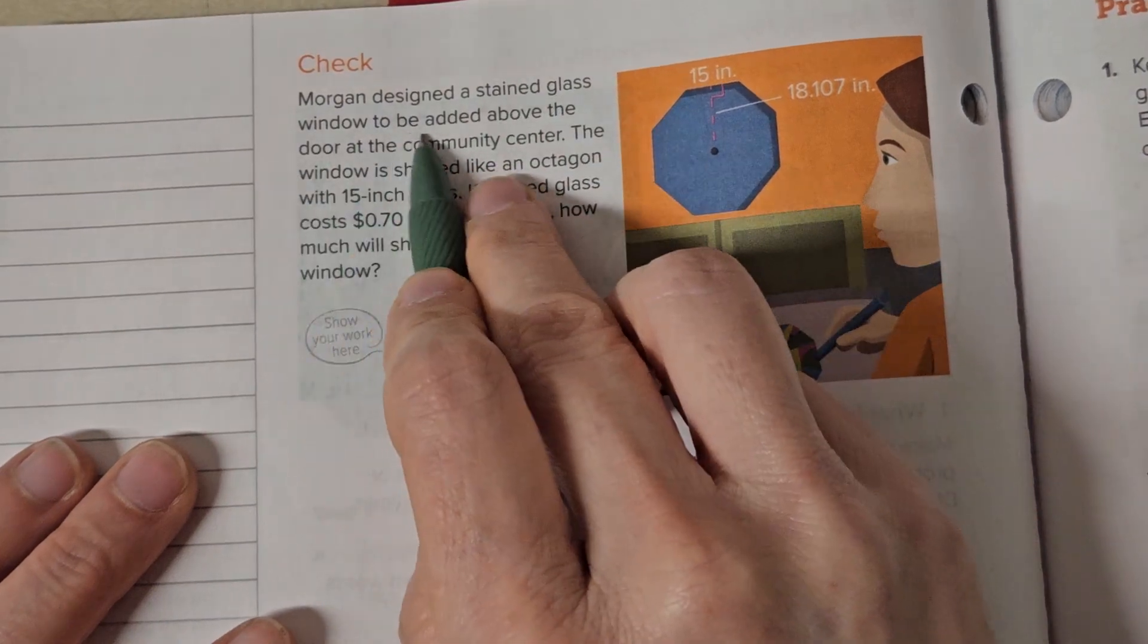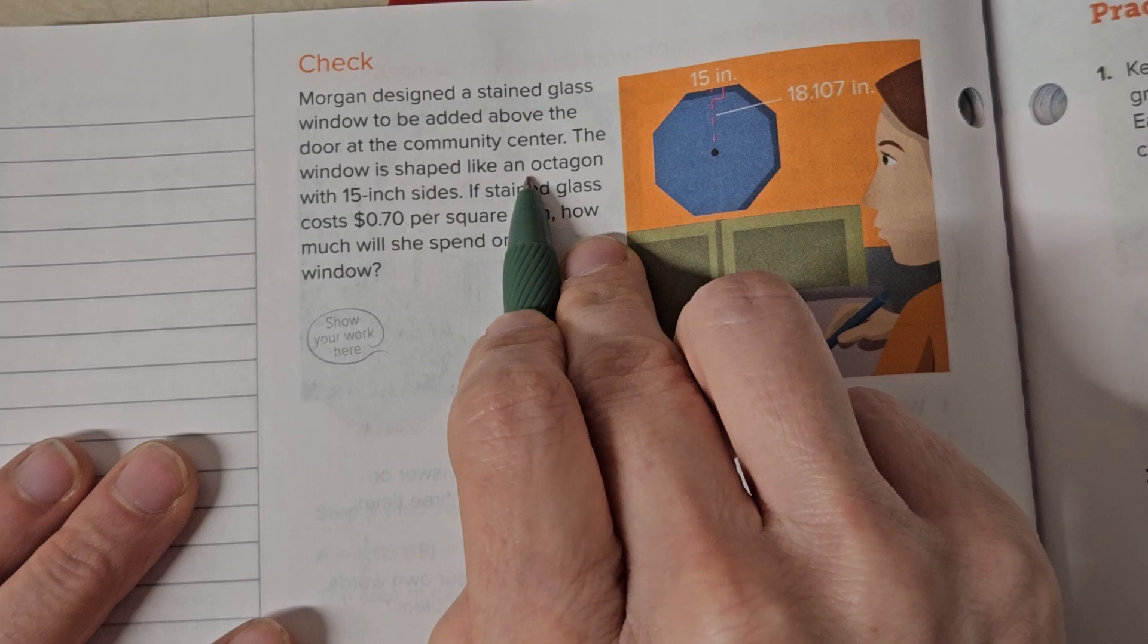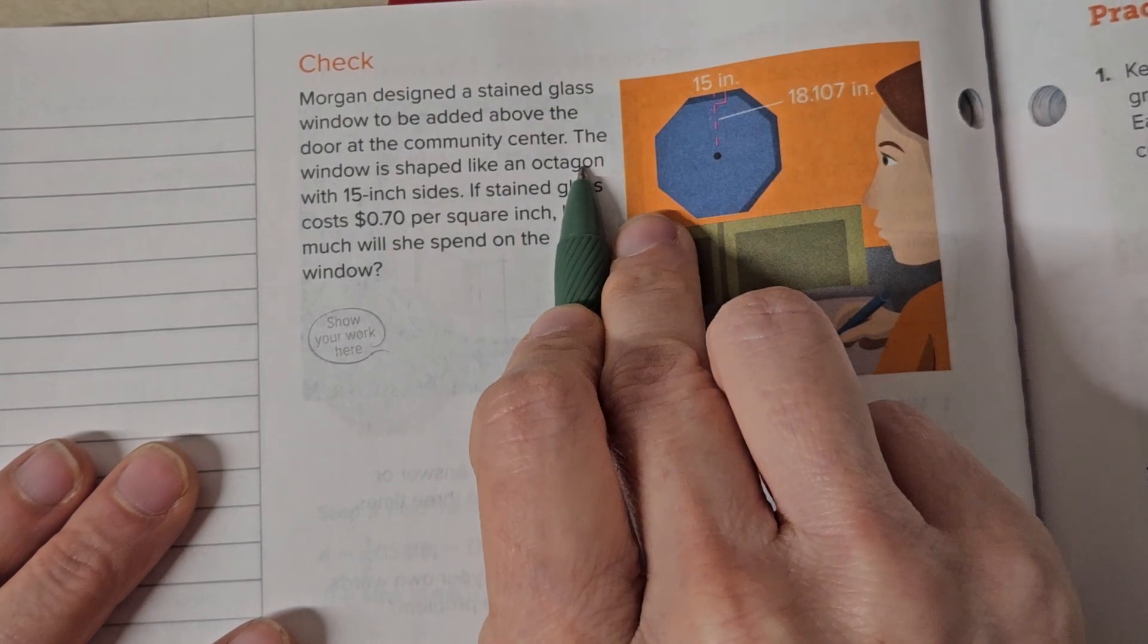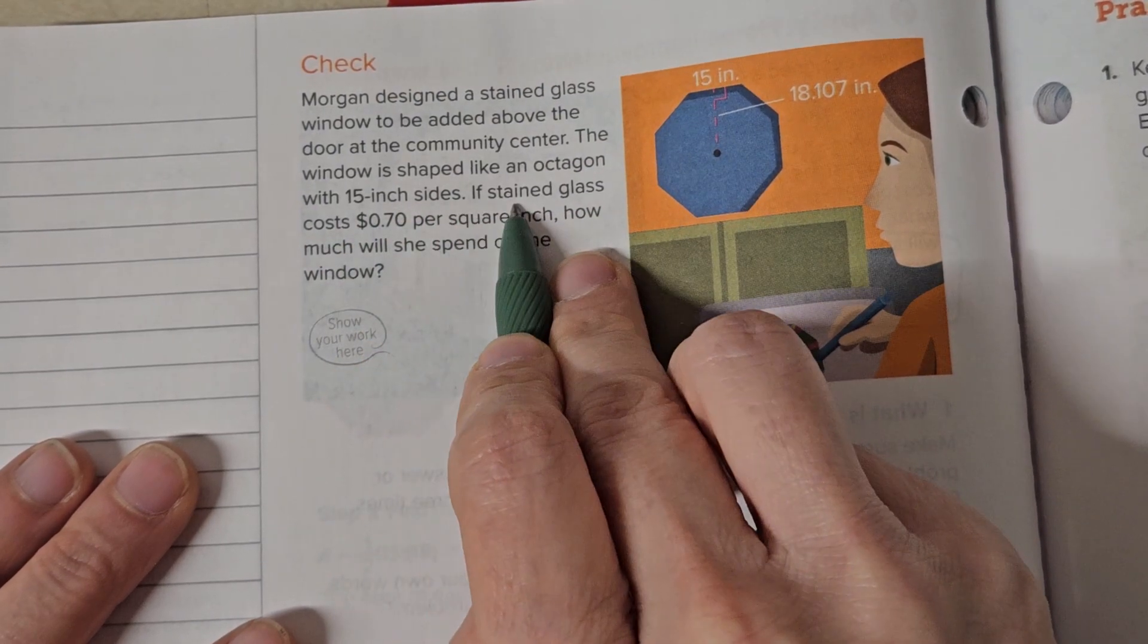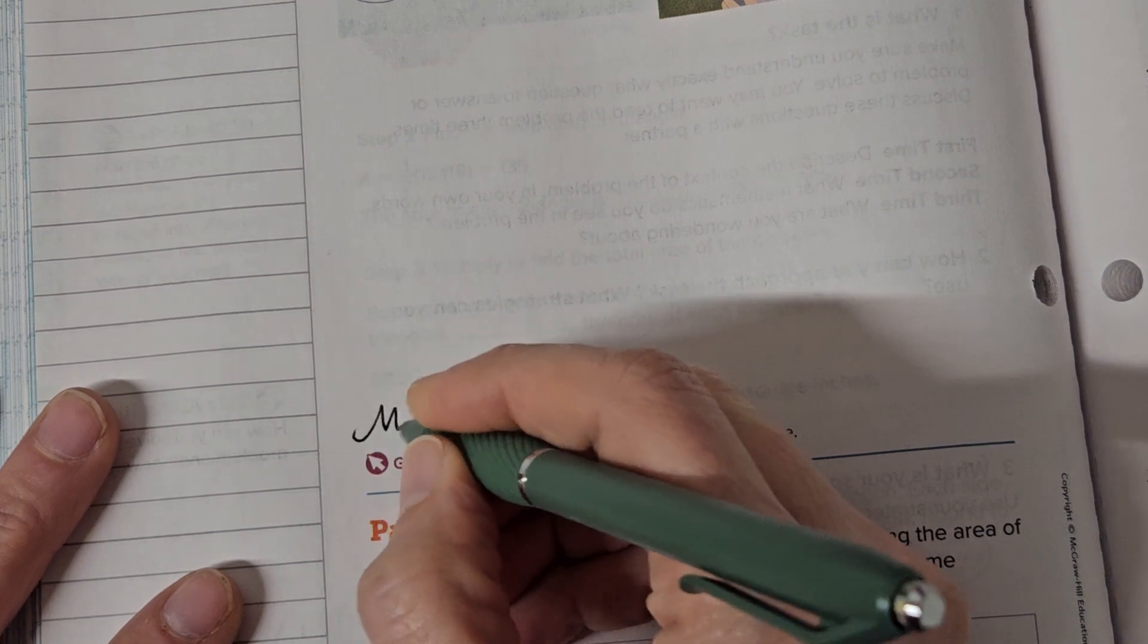Morgan designed a stained glass window to be added above the door at the community center. The window is shaped like an octagon, and we learned an octagon has eight sides, with 15-inch sides. If stained glass costs 70 cents per square inch, how much will she spend? Let's write our little sentence: Morgan will spend some number of dollars.